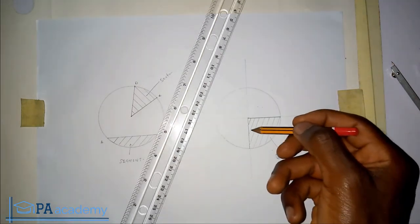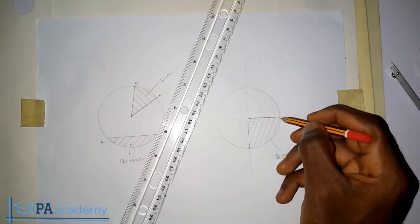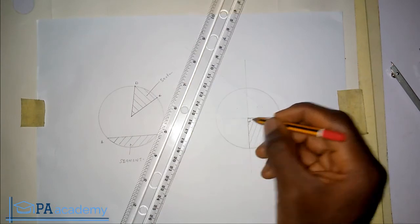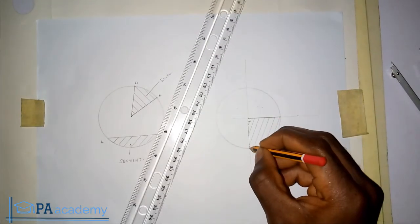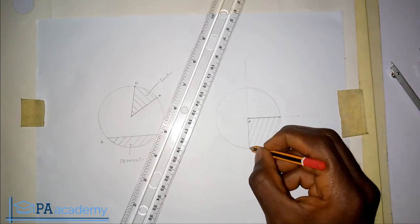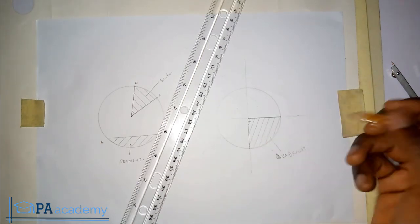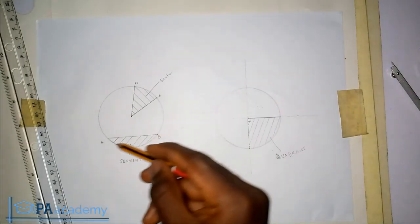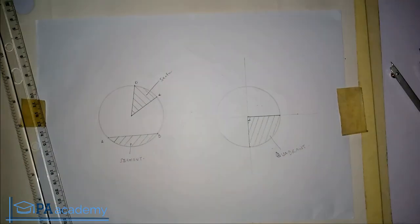The important thing is to know that a quadrant is a part of a circle bounded by two radii — this is one radius, this is another radius, and they are at right angles to each other, meaning this angle here is 90 degrees. And an arc — from this point to this point — is a part on the circumference of the circle. So we've been able to look at a segment, a sector, and a quadrant.